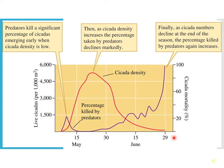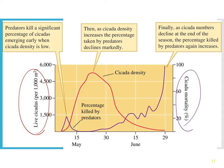Looking over the course of the summertime, as cicadas first come out, the red line shows the number of cicadas on the left axis, and the purple line is the percentage of those that die. As you have few of them first coming out, a large percentage are getting eaten — the birds come in and eat them. As you get more and more cicadas, the birds can't eat anymore. It's not that birds are eating less; they're eating the same number, but that's a lower percentage of the population. As the cicada density declines, the percentage eaten goes up again. If you're in that big group at peak density, very few of you are going to get eaten by the birds.